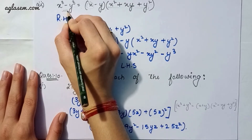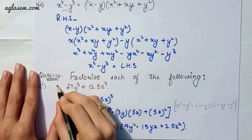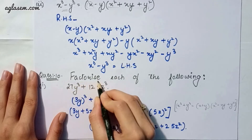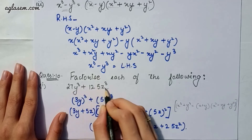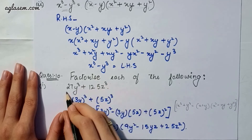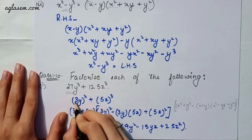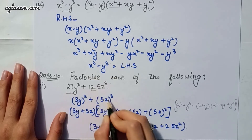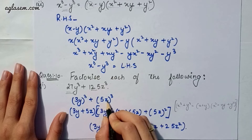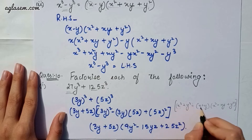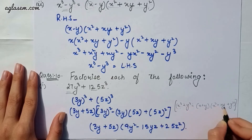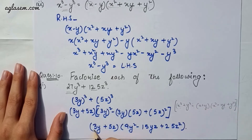Moving to the tenth question, which says factorize each of the following. Part one: 27y³ + 125z³. We can write 27y³ as (3y)³ and 125z³ as (5z)³. Applying the formula x³ + y³ = (x + y)(x² - xy + y²), we get (3y + 5z)(9y² - 15yz + 25z²).